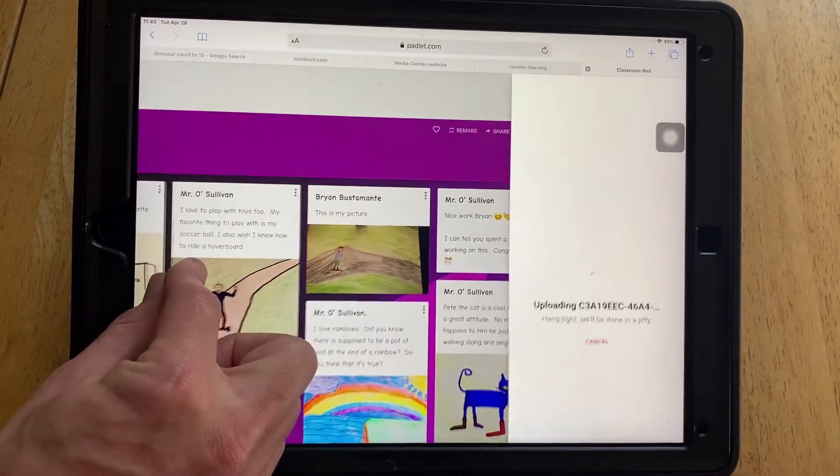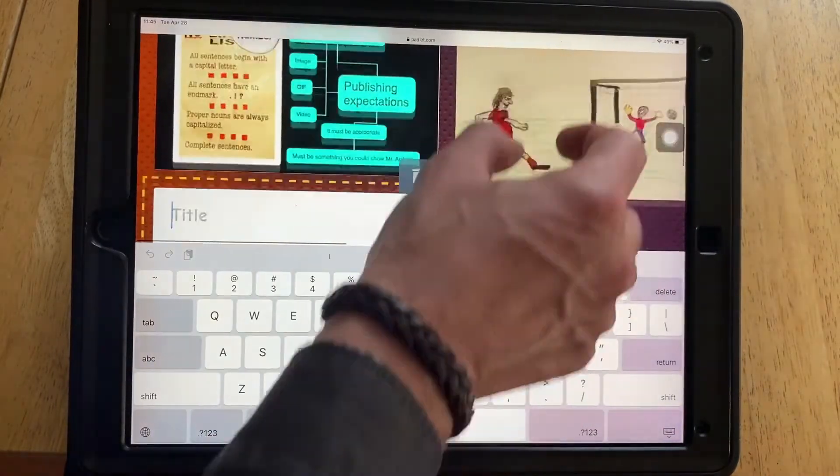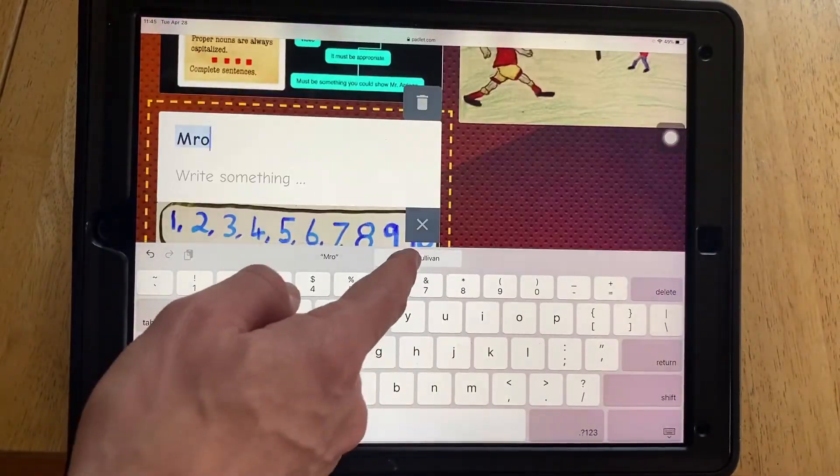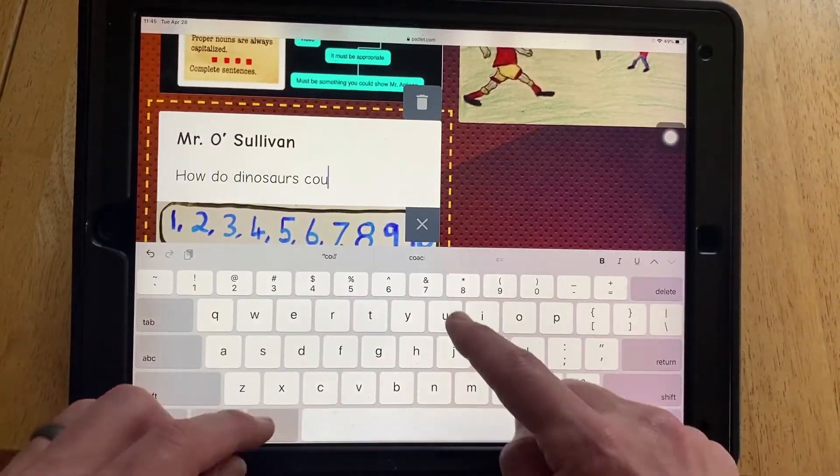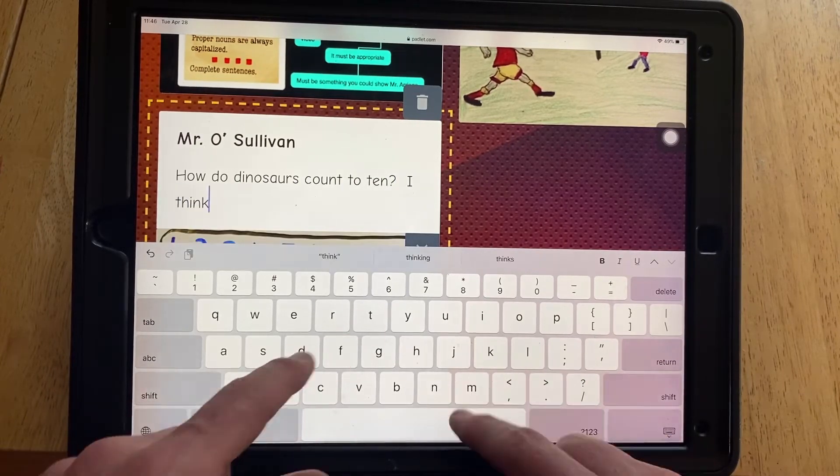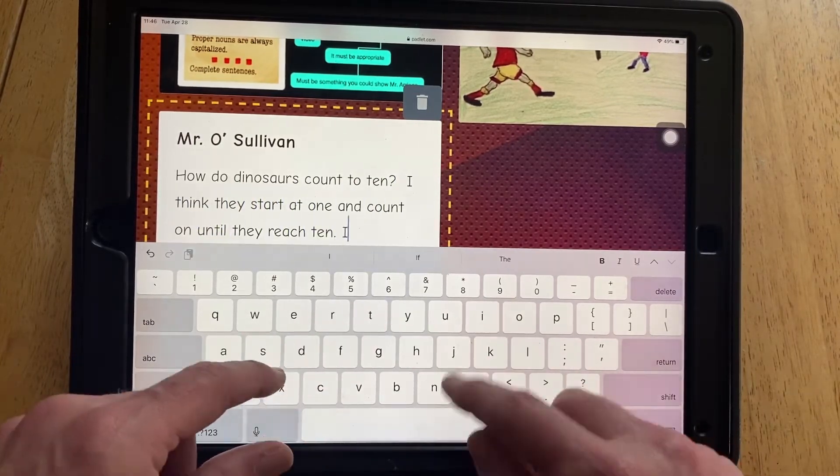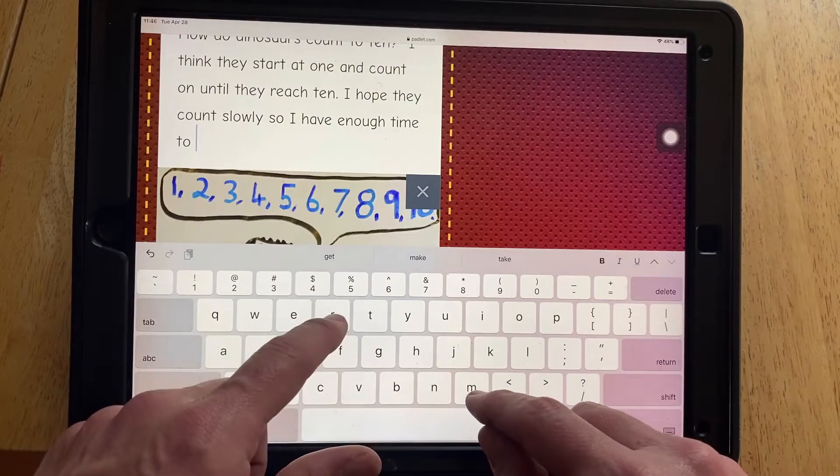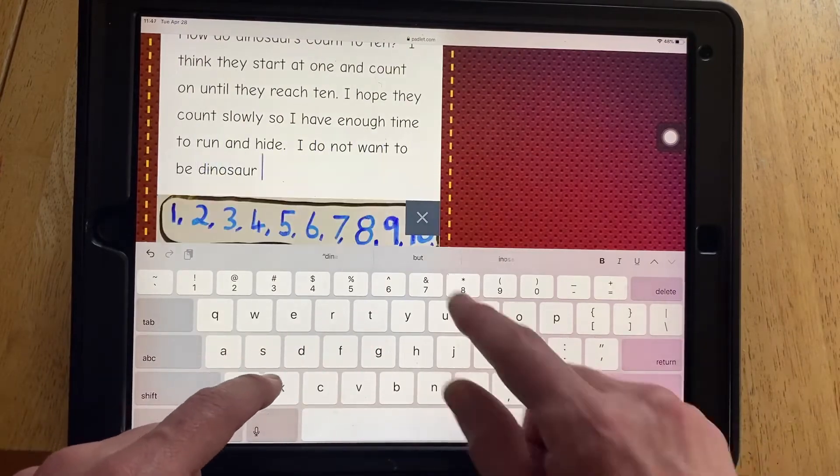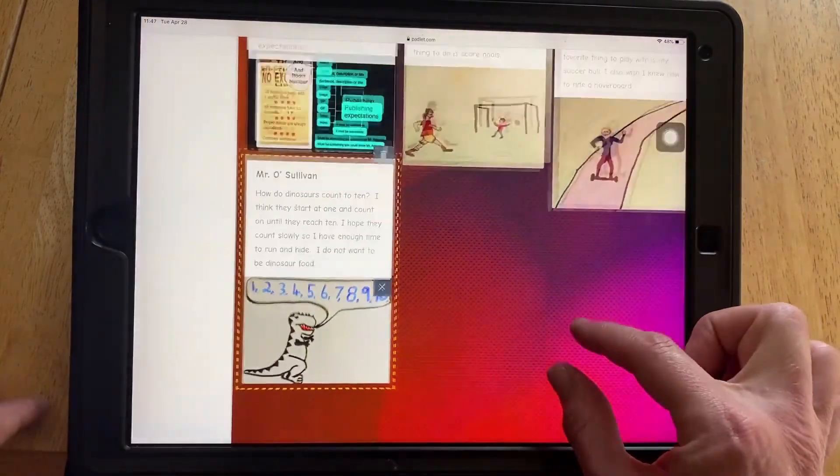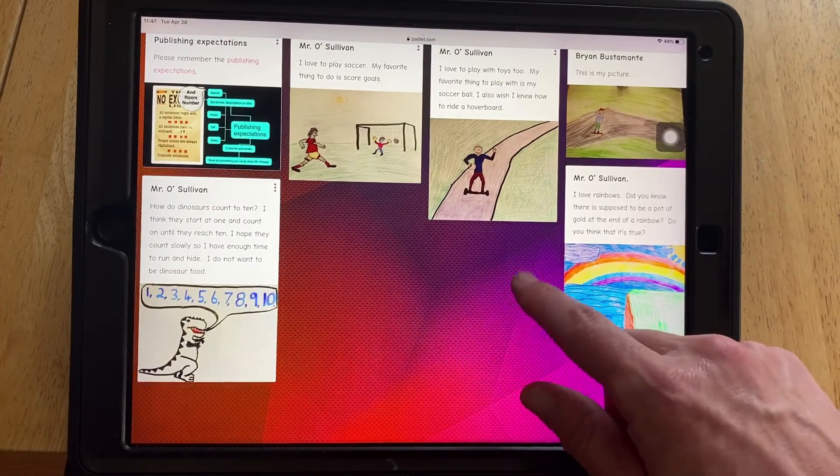Now if you're going to write something, what are some things you should write when you publish something, Grace, do you think? You should write the title and your name and like a story based on the thing. Sure. And if you don't want to write a story, you can just maybe write just a little description or tell me something about your drawing.